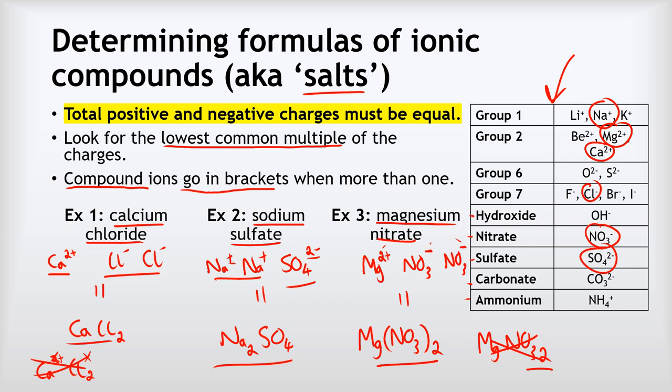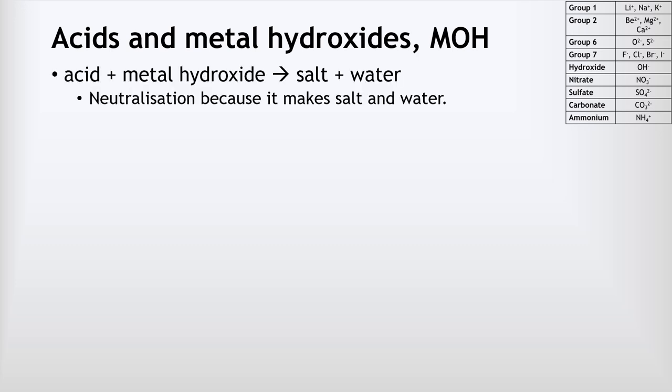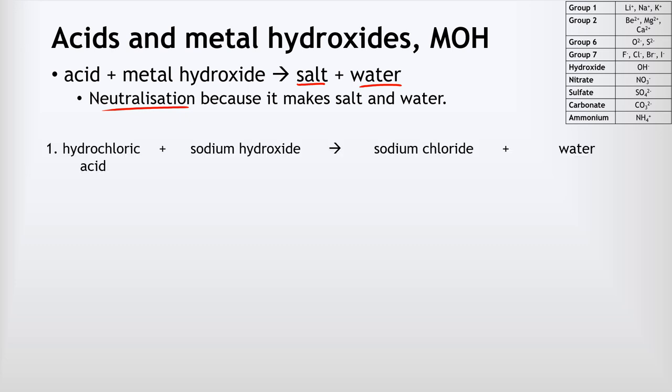The first reaction we're going to look at is acid with metal hydroxide. An acid and a metal hydroxide makes a salt and water — that's a neutralization reaction. Example one: hydrochloric acid reacting with sodium hydroxide to make sodium chloride and water. If you don't know why that's the word equation, check the previous video, but let's move on to the symbol equation.